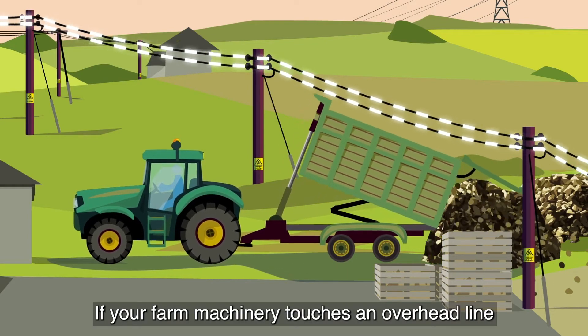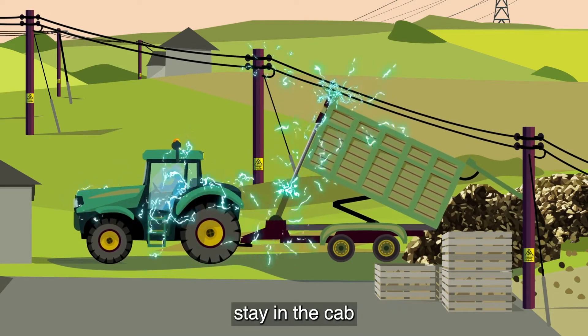If your farm machinery touches an overhead line, stay in the cab, call 105, wait for assistance, and always assume lines are live unless the distribution operator tells you otherwise.